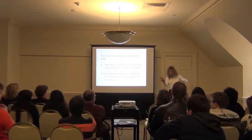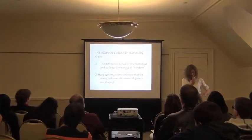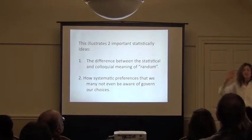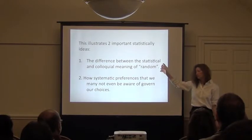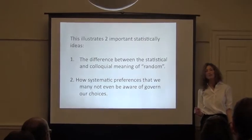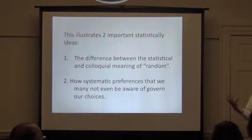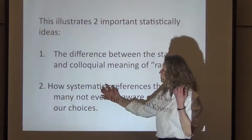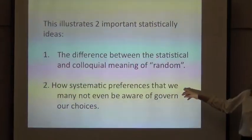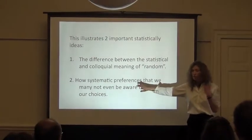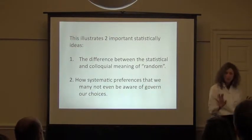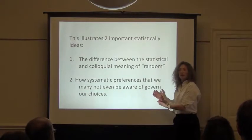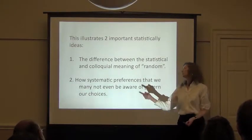It illustrates, I mean, in any crowd when we do this, this is very typical. It illustrates two very important statistical ideas. One is the difference between what we mean by the colloquial meaning. People are always saying, oh, it's a random meaning. It's haphazard. And the other is statistical definition of random, which is very precise. And in this case, it would mean that we wanted every number to have an equal chance of being chosen. They're wildly different. And the reason is because we have, it'll be the second point that's extremely important, that how we have systematic preferences, you can call them biases, that we may not even be aware of. We might not have known you were pro 3. They govern our choices. And that we have to be very careful. So randomization is a way to avoid that.